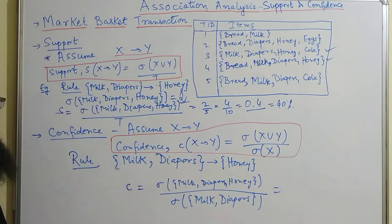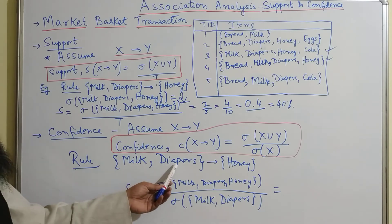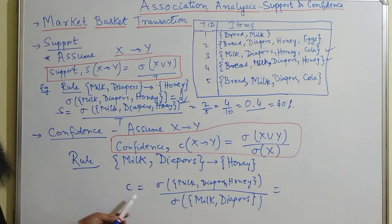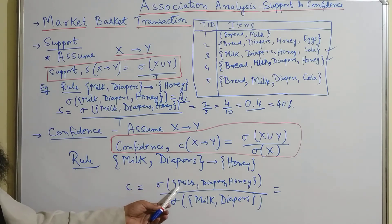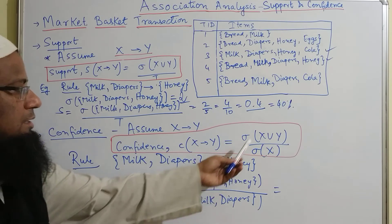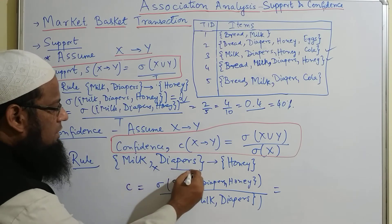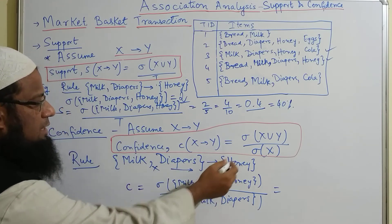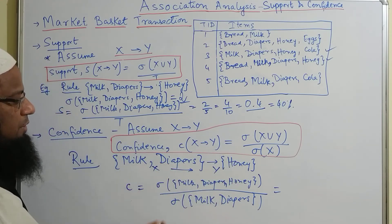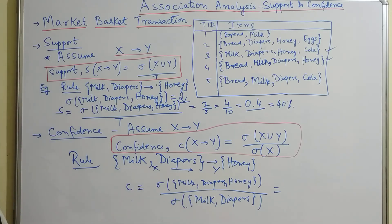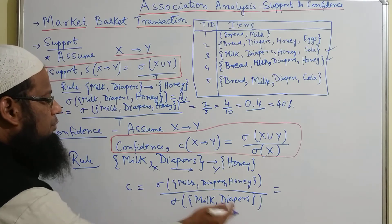We have a rule that says milk and diaper implies honey. So confidence is equal to the support count of milk, diaper and honey — that is their union — divided by the support count of X. Here Y is honey and X is milk and diaper, divided by those transactions or that support count where milk and diaper occur together.